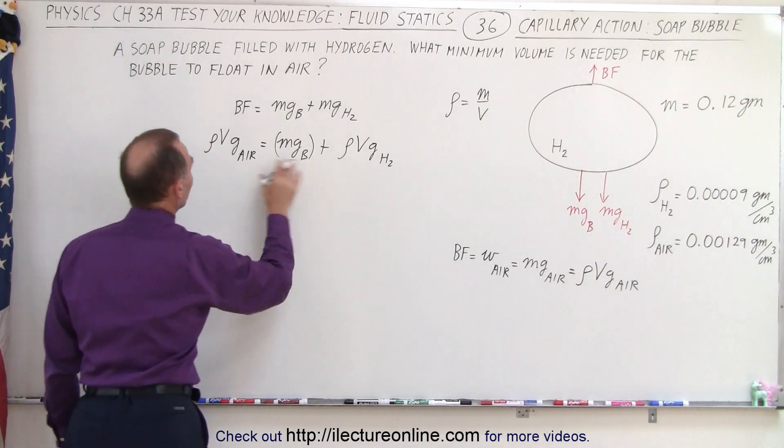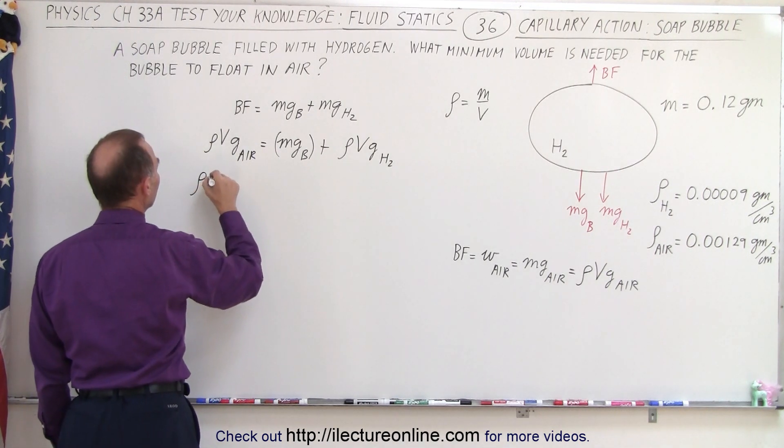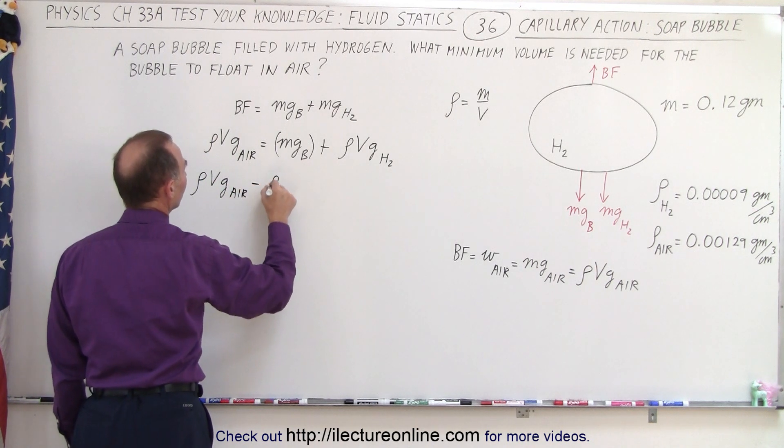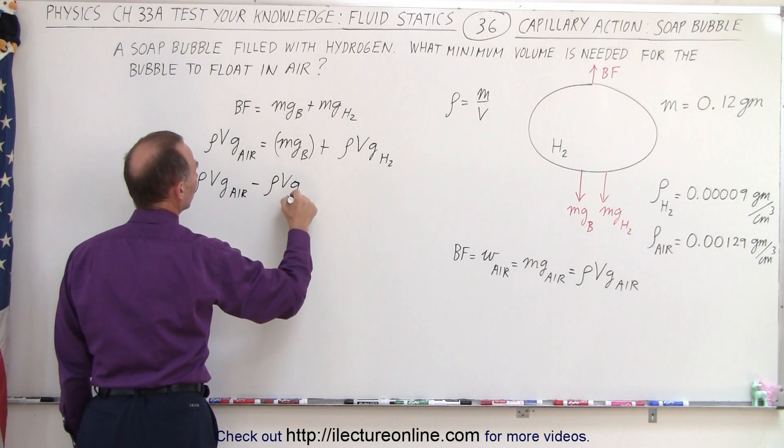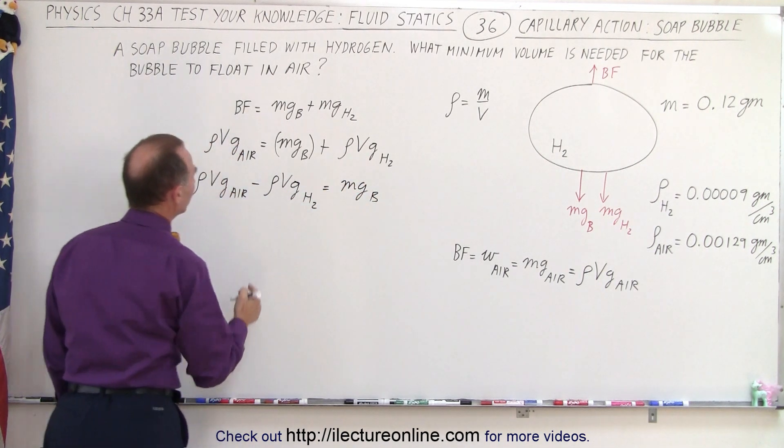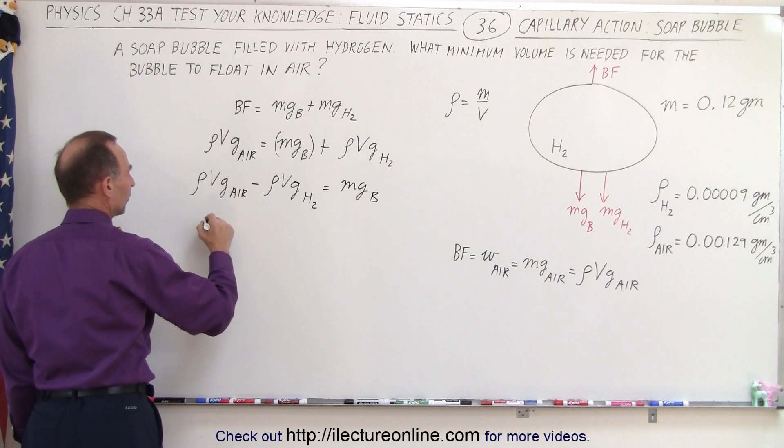So let's go ahead and move that over here. So we have the density, volume, g for the air, minus density, v, g for the hydrogen, equals the weight of the bubble. Now we can factor out a v.